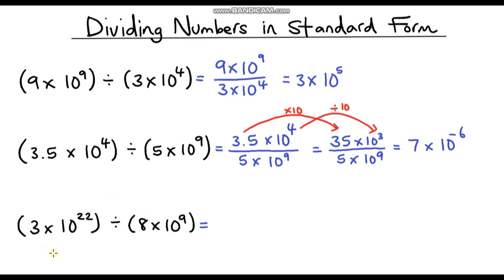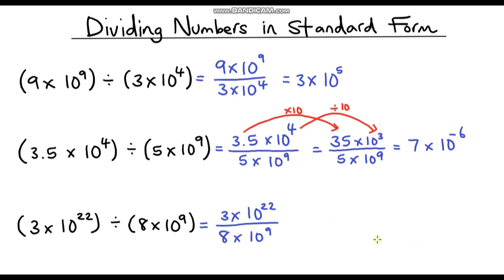Let's take a look at the final example. I'll rewrite it as a fraction. Looking at the single digit numbers, we don't have any decimals, so we just need to do the division itself: 3 divided by 8. For this I'm going to use long division — the bus stop method.